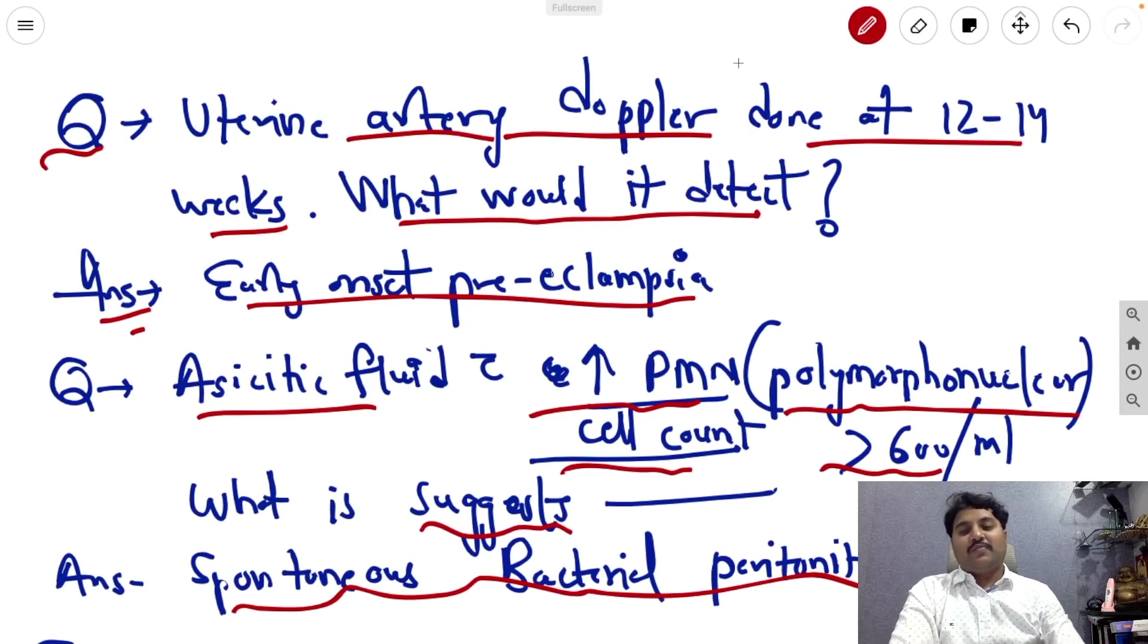So my dear friends, more and more questions are there. You try an artery Doppler done at 12 to 14 weeks, what would it detect? The answer is early onset preeclampsia. Next, the acytic fluid with the increase in PMN, that is polymorphonuclear cell count which is more than 600 per ml, what would it suggest? It was spontaneous bacterial peritonitis.